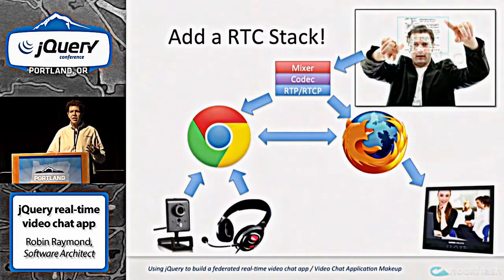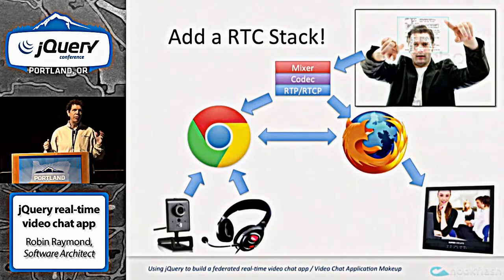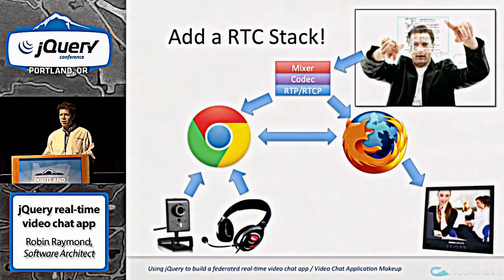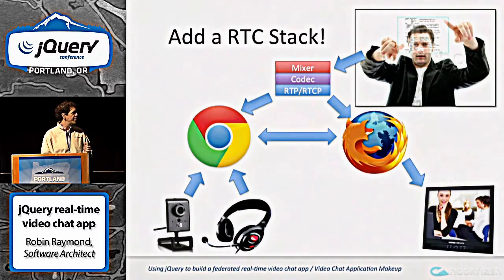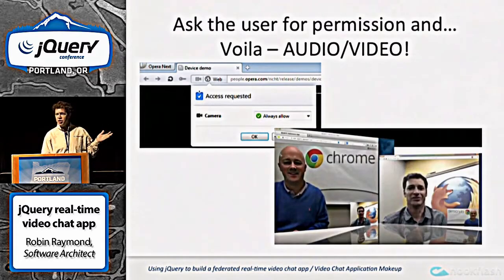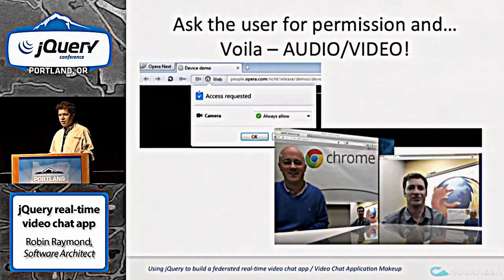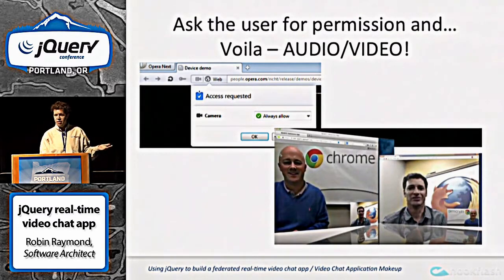The basic principle is that you take a media engine and a real-time communication stack, shove them into the browser, and that allows you access to your camera and microphone and lets you send the media somewhere else. Then you just ask the user: do you want to turn on your camera? Do you want to allow this website to record you? And voilà, you've got video chat.